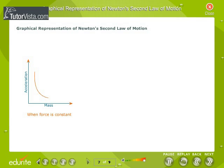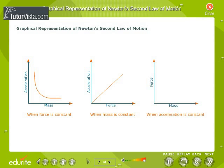Graphical representation of Newton's Second Law of Motion: the three graphs shown here give the relationship between force, mass, and acceleration when one of these quantities is kept constant.